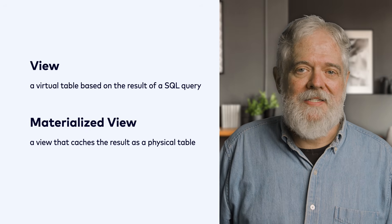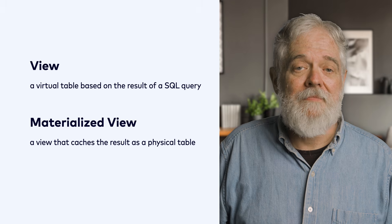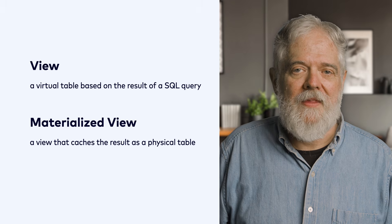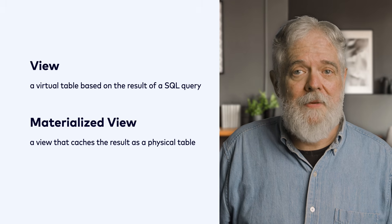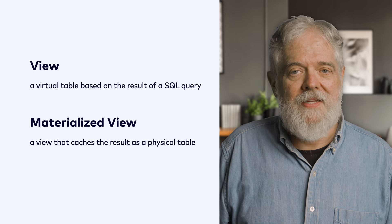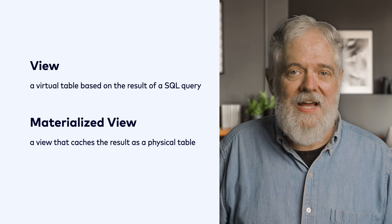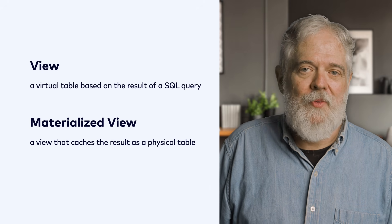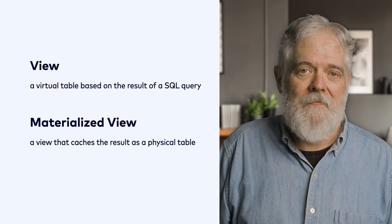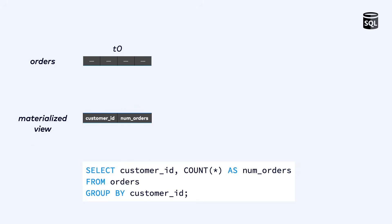Some databases take this one step further with a concept called materialized views. A materialized view is like a view except that the result of the query is materialized, meaning it is stored as a physical table that serves as a cache. This is helpful in situations where a query is going to be used over and over. Here's the same query we were just looking at, which counts the orders placed by each customer. Each time this query is executed, the database scans the orders table counting orders. What we can try instead is to define a materialized view based on this query.